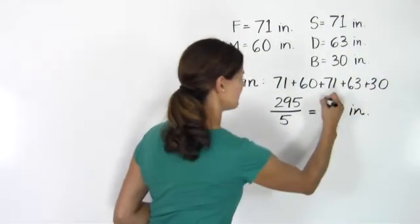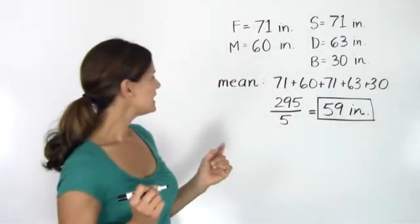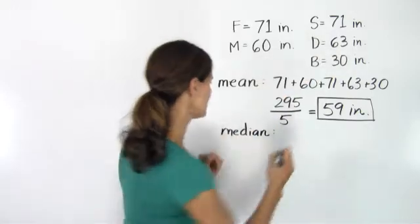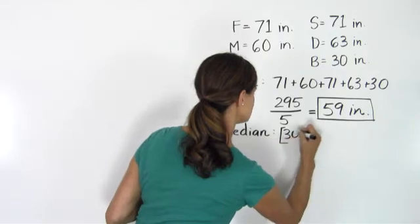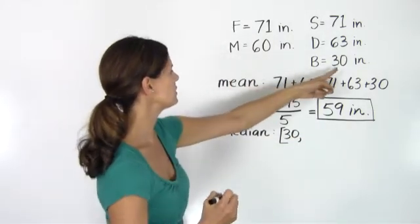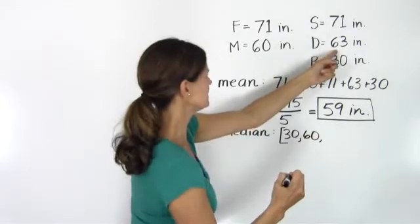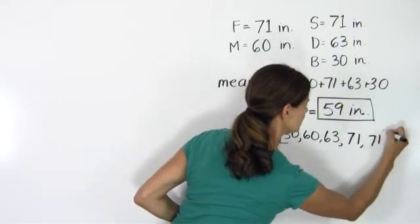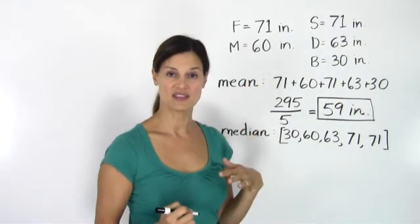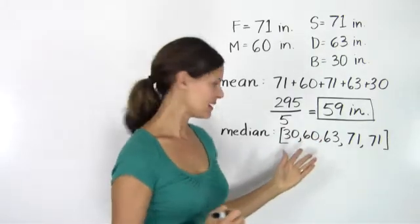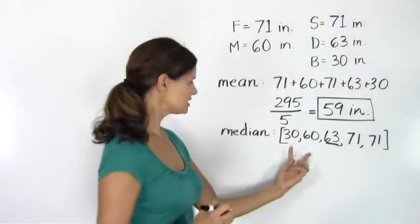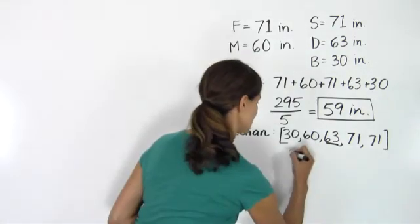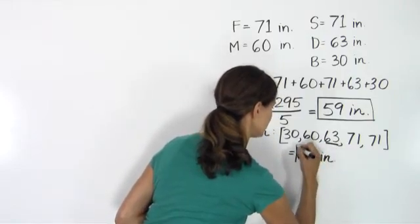So the mean height of this family is 59 inches. To find the median, we order the values from lowest to highest: 30, 60, 63, 71, 71. Since we have an odd number, a family of five, our median or middle number is the third one over. We can check and make sure we have two values to the left and two values to the right. Our median is 63 inches. We always need to label our answers.